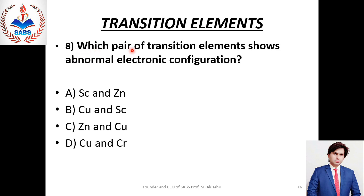Next question No. 8: Which pair of transition elements shows abnormal electronic configuration? 3D series میں copper اور chromium یہ دو ایسے elements ہیں جو Aufbau principle کو obey نہیں کرتے۔ Chromium میں 4S سے electron jump کر کے 3D میں چلا جاتا ہے تاکہ تمام D orbitals partially filled ہو جائیں، اور copper میں 4S سے ایک electron jump کر کے 3D میں چلا جاتا ہے تاکہ تمام D orbitals completely filled ہو جائیں — کیونکہ completely یا partially filled orbitals والے atoms زیادہ stable ہوتے ہیں۔ Right option is Delta.